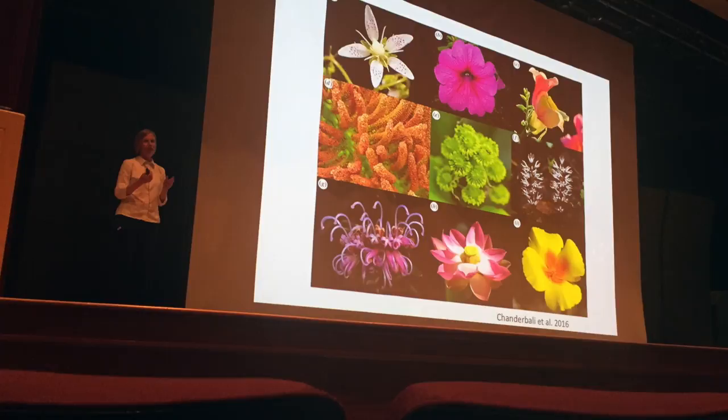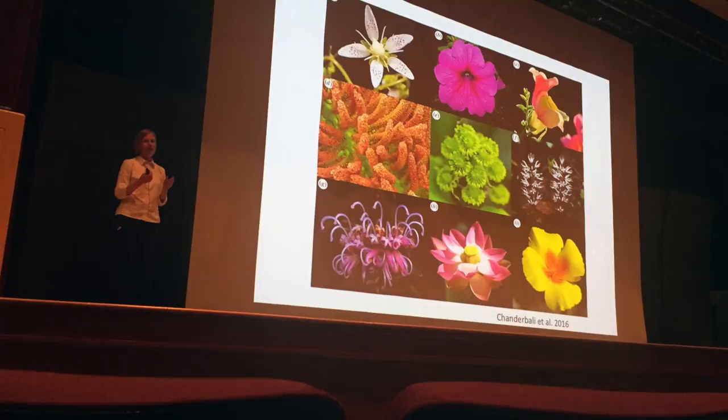Smith's research area is in flowers and the chromoplast that is typically red or orange. 'My research has been trying to figure out how you switch flower colors. Currently, we are trying to understand biochemically how does it happen,' Smith said.